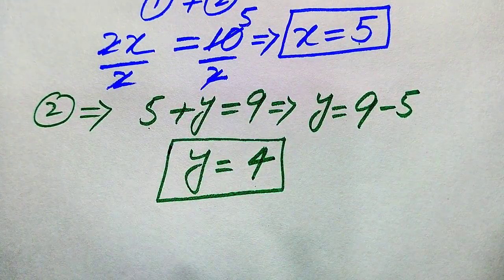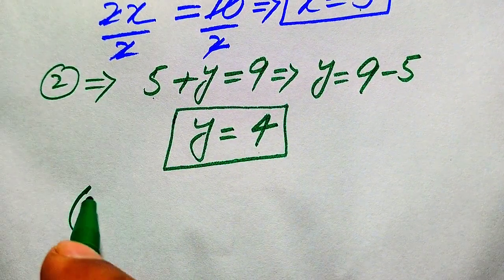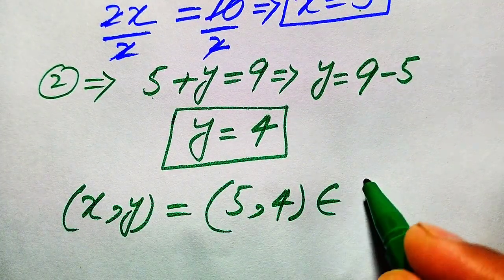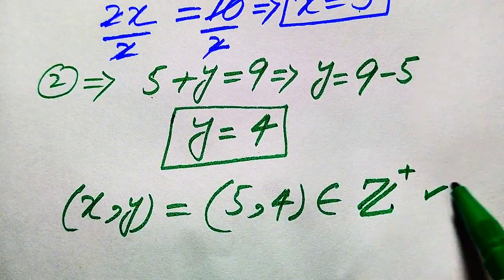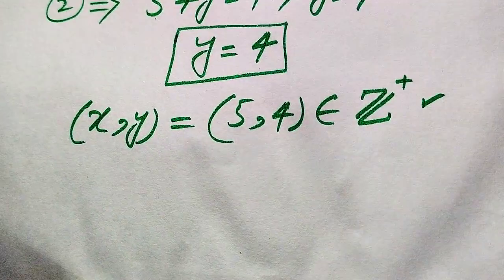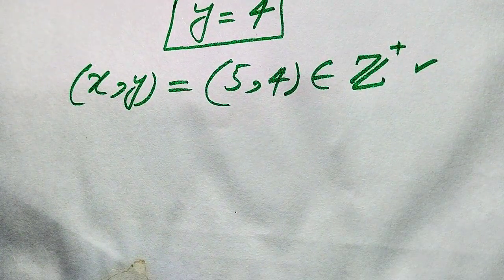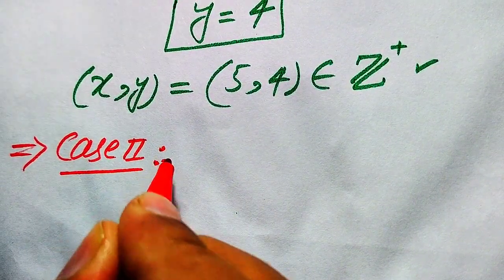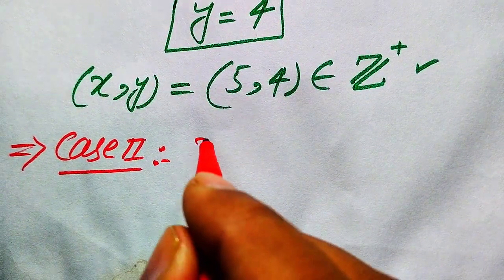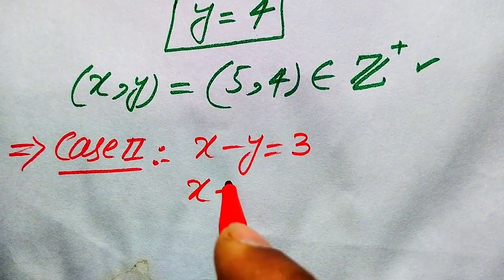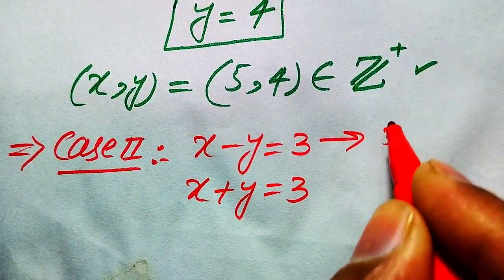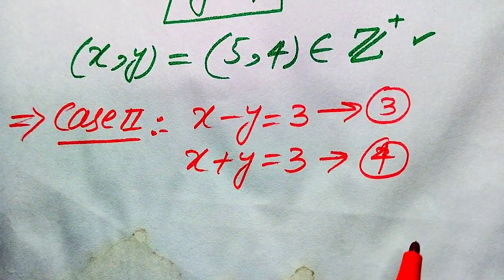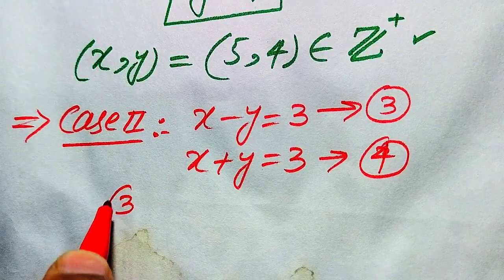So the first solution of the given equation is (x, y) equals (5, 4). This solution belongs to the positive integers. Now we find the solution from Case 2. Copying down both equations from Case 2: equation 3 is x minus y equals 3 and equation 4 is x plus y equals 3.